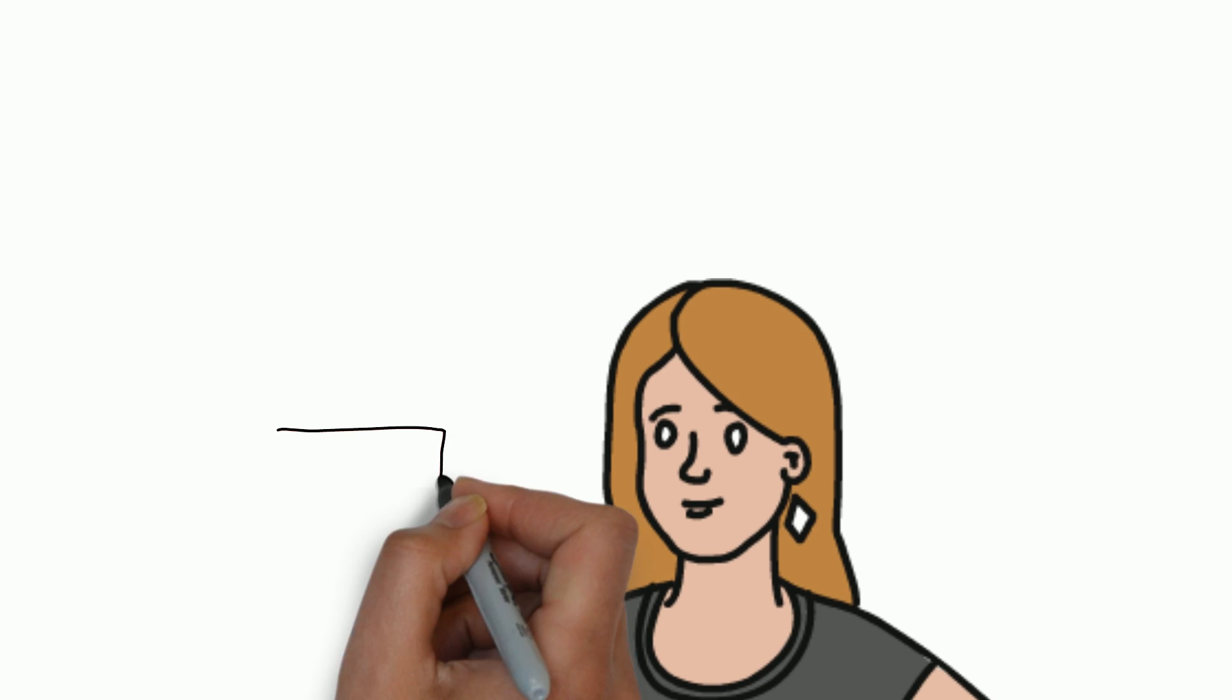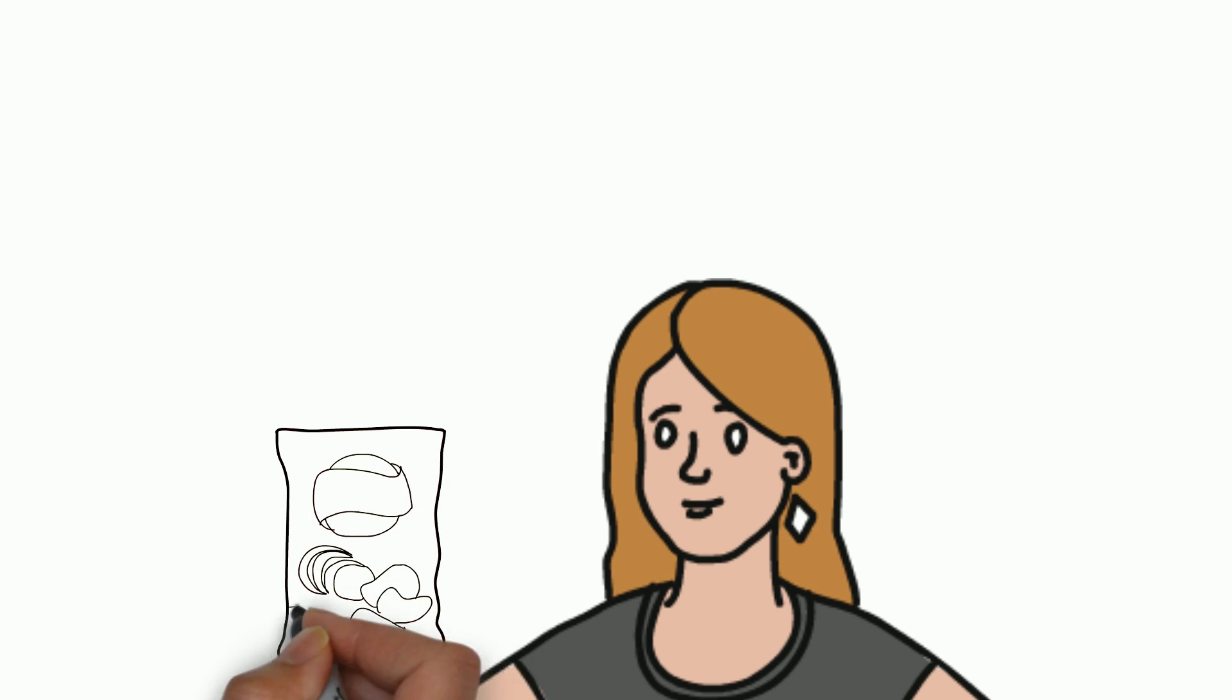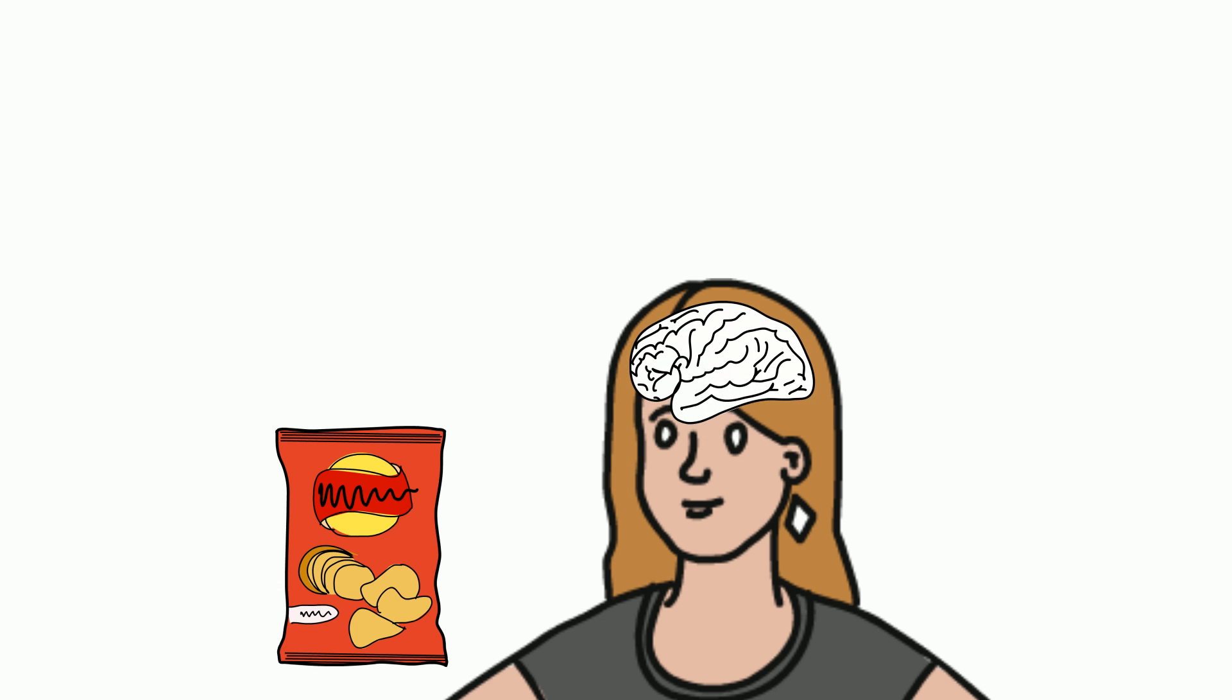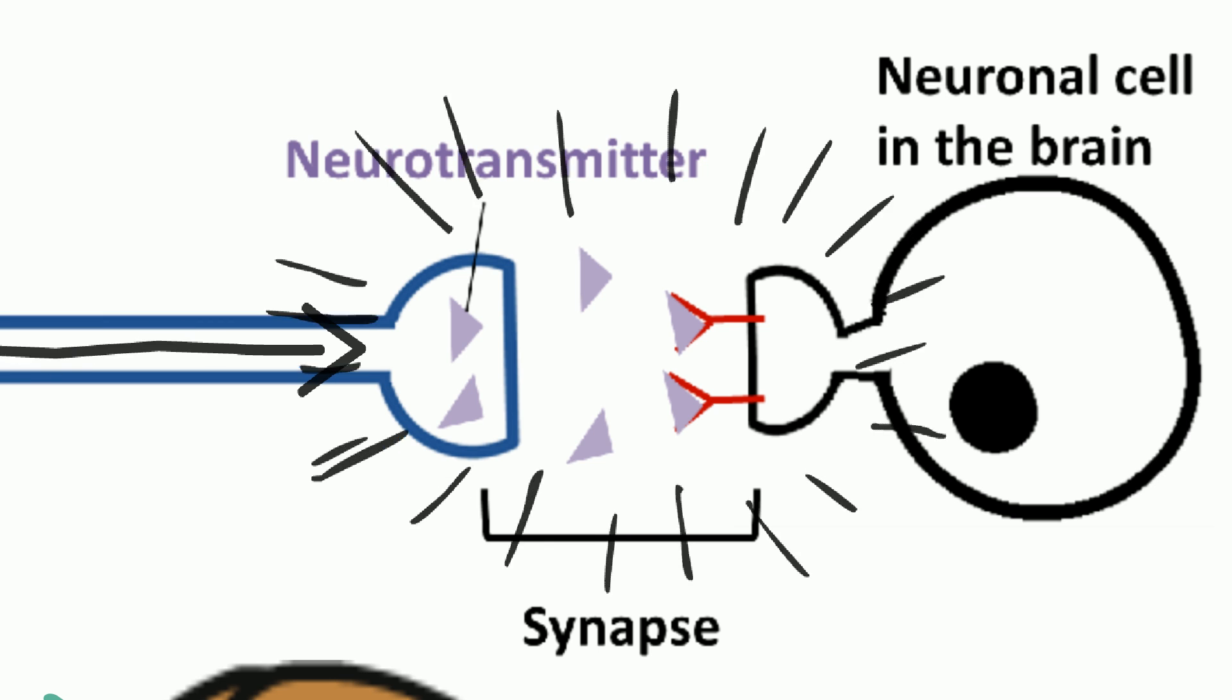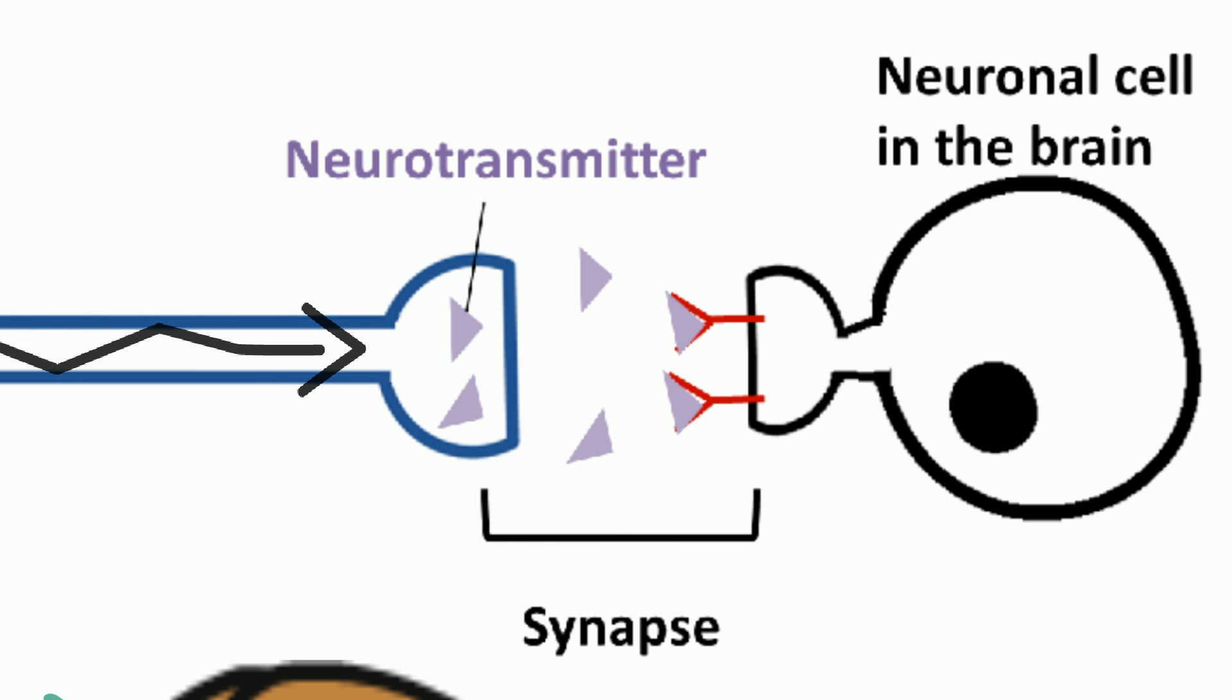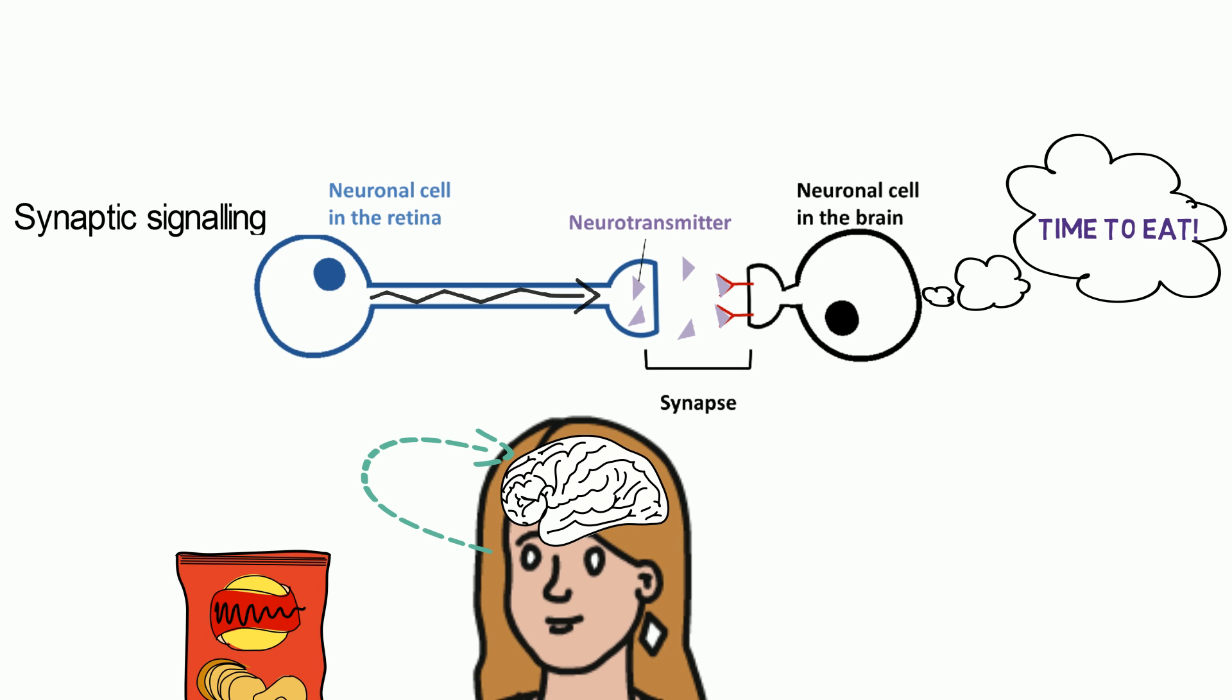When the lady sees the packet of potato chips, there will be a signal sent from the neurons in the retina of her eye to the neurons in her brain. This is known as synaptic signaling. Electrical impulses are transmitted from the neuronal cell body to the axon, which results in the secretion of neurotransmitters that diffuse across the synapse.